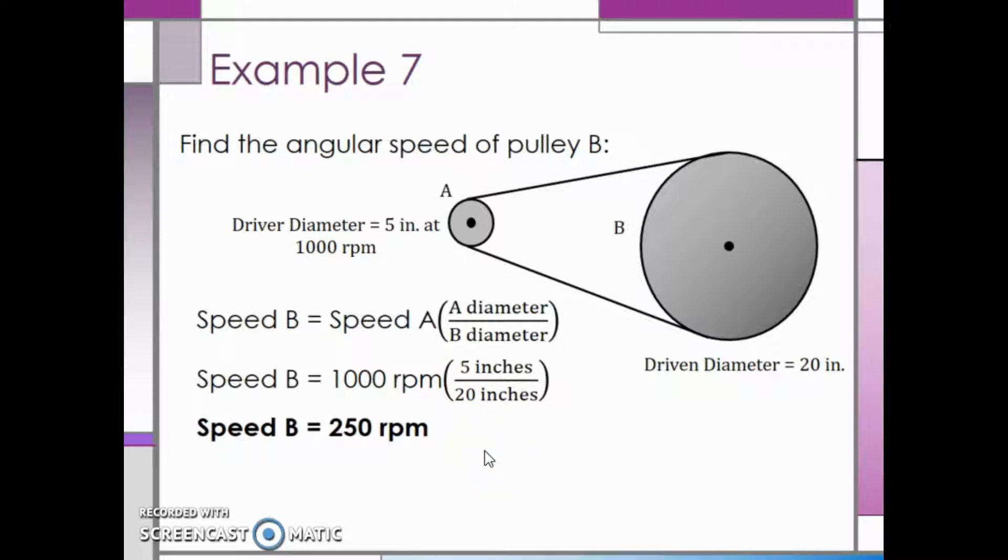This makes sense since the diameter of B is four times larger than the diameter of A, so it should be spinning one quarter as fast.